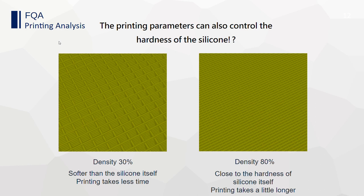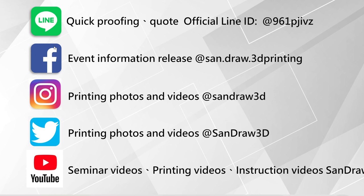Lastly, we would like to share some information about the parameters. The printing parameter can also control the hardness of the silicone. Take these two pictures as an example: the density on the left picture is 30% — it is softer and takes less time to produce compared to the right one. The density of the right picture is 80%, so the silicone is harder and requires more time to make. Furthermore, the cost on the right is higher. We don't usually set the density to 100%, which is why sometimes clients don't get the density they expected. The density directly influences the hardness.